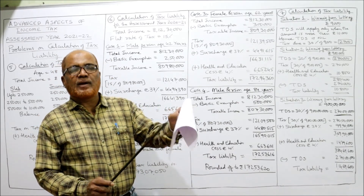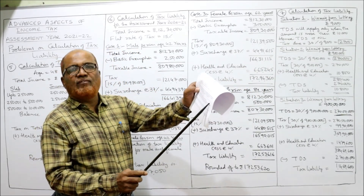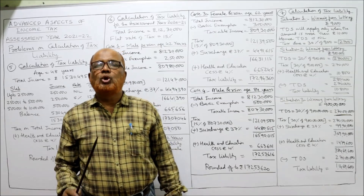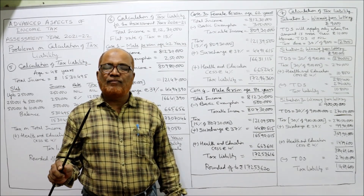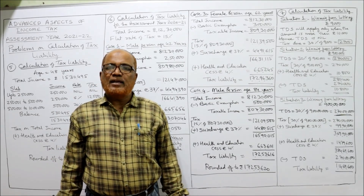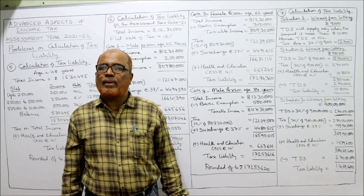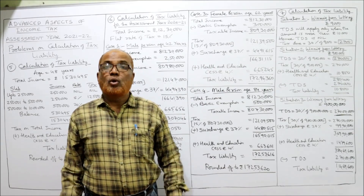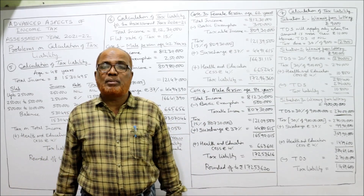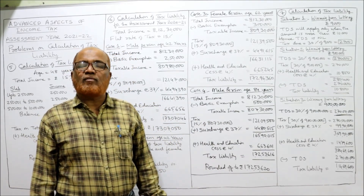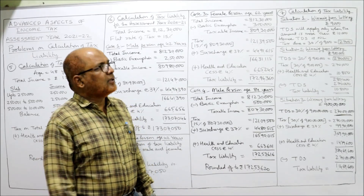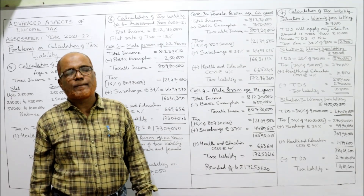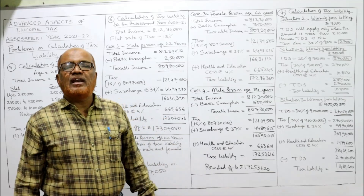Situation 1: winning from lottery is nine thousand rupees. According to the Income Tax Act, no TDS will be applied if casual income is below ten thousand rupees. The full ten thousand will be paid to the winner — no TDS. But tax is applicable. Remember: for casual income, no basic exemption will be applied. The tax rate for winning from lottery is thirty percent flat. Thirty percent of nine thousand gives two thousand seven hundred. The tax liability of the SSC is two thousand seven hundred.